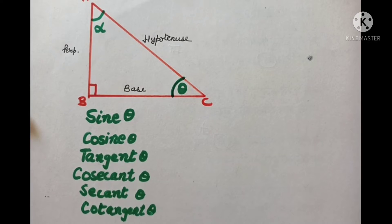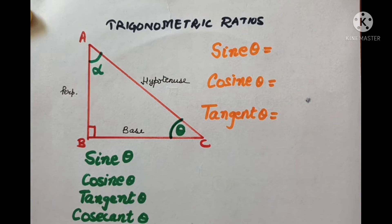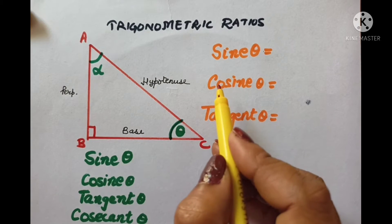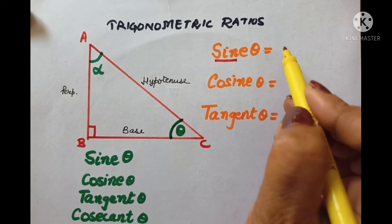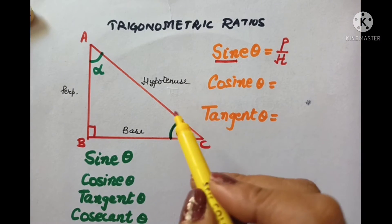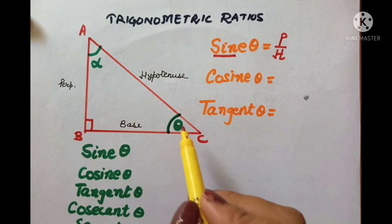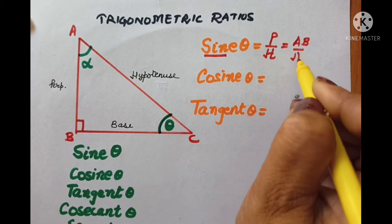Let us see what the formulae are for these and how we can remember them. Let us first concentrate on the first three T-ratios. Sine theta is perpendicular upon hypotenuse. So, if I am considering theta, perpendicular becomes AB and hypotenuse is AC, so I will have AB upon AC. Cosine theta is base upon hypotenuse — when considering angle theta, the base becomes BC, giving BC upon AC.